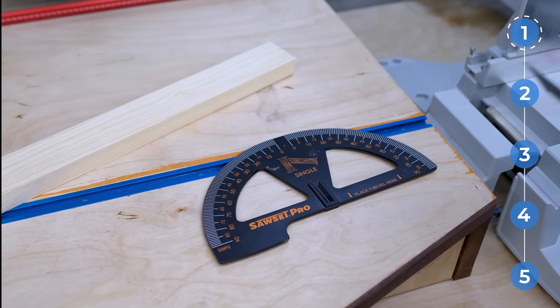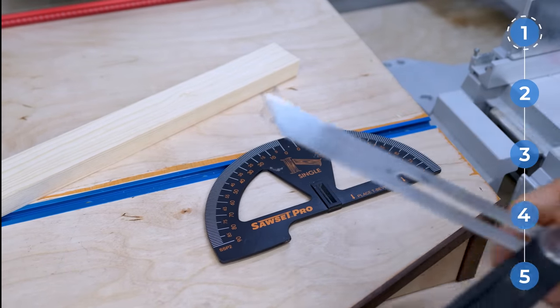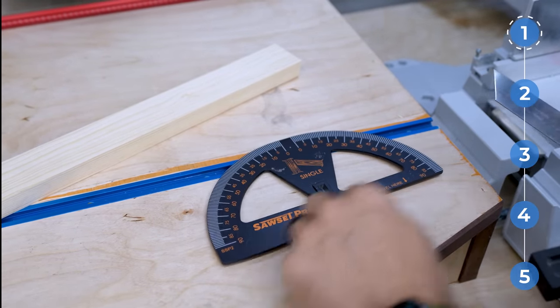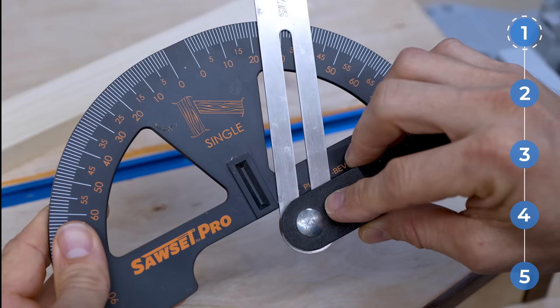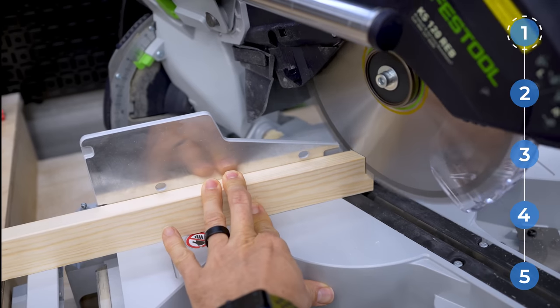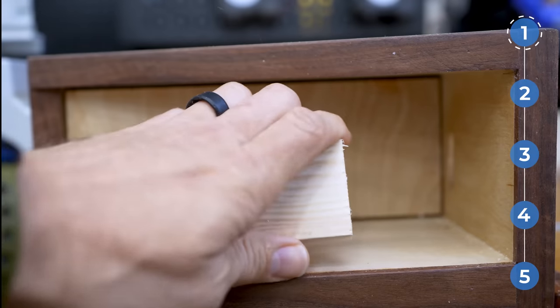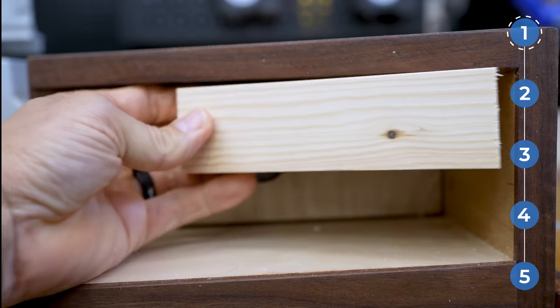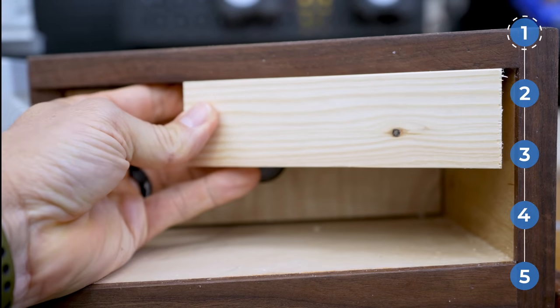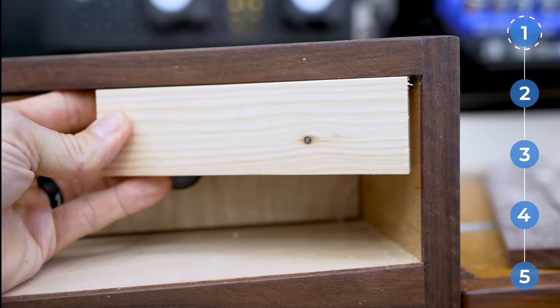We're going to use the single side of the Sawset Pro. It says place T-bevel here, on the bottom, looking at about a 22 and a half degree angle. If I use the square piece and put it at that angle, you see it would look kind of funky right there on that edge.